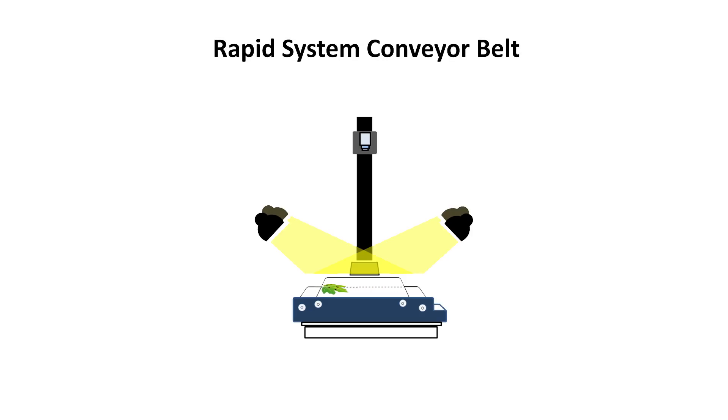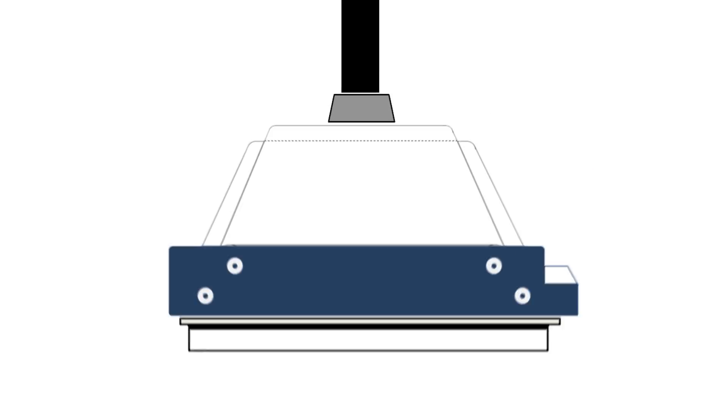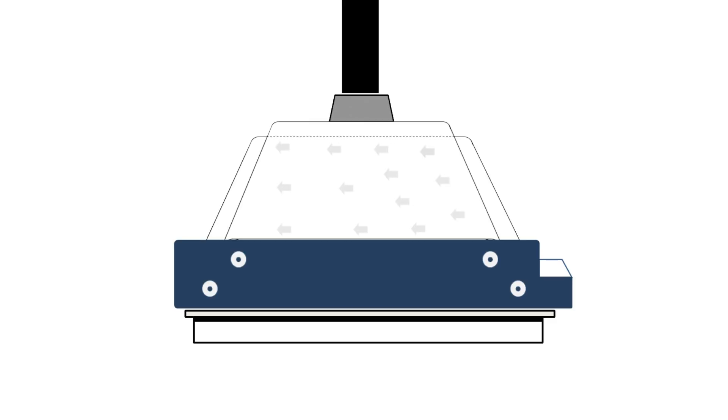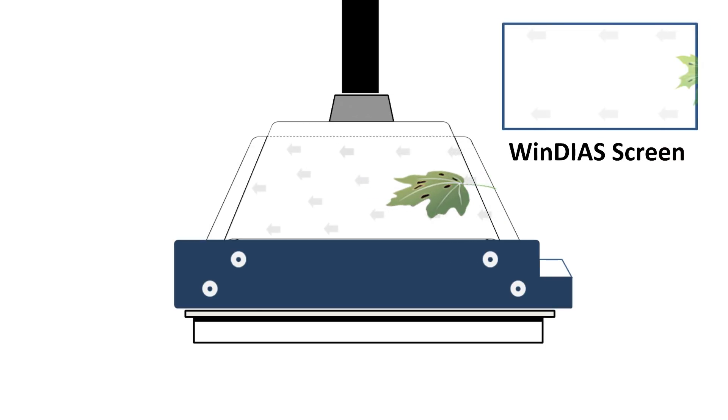Now, let's take a closer look at the rapid system and the advantages of the conveyor belt for fast real-time processing of leaves. The user feeds leaves through the conveyor, and each leaf is automatically held flat, captured by the camera, and processed in software.